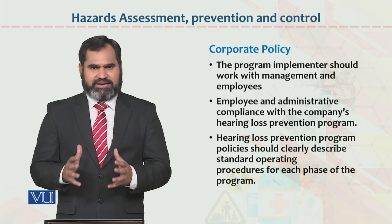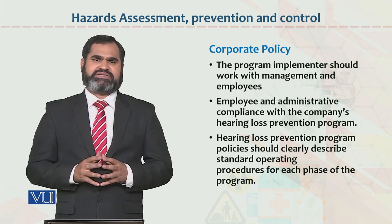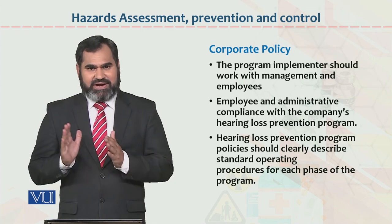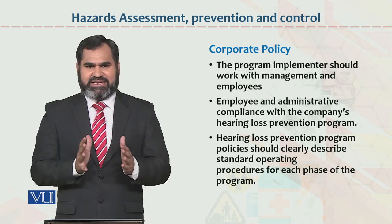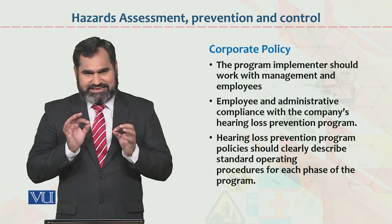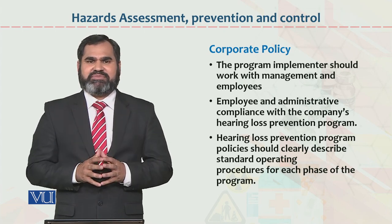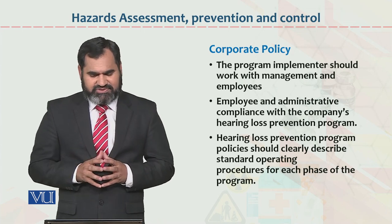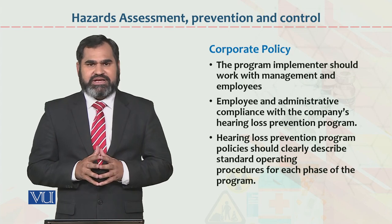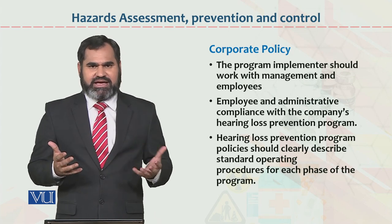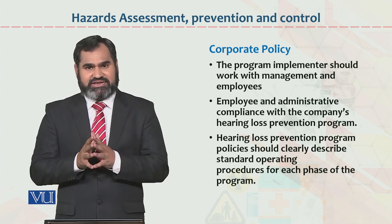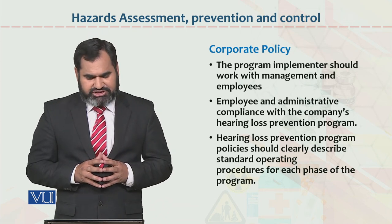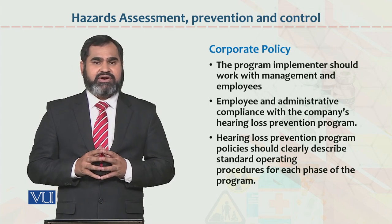Corporate policy ke typical points mein teen points hain. First, the program implementer should work with management and employees to determine acceptable noise levels. Second, employee and administrative compliance with the company's hearing loss prevention program should be checked. Third, the hearing loss prevention program policy should clearly describe standard operating procedures.